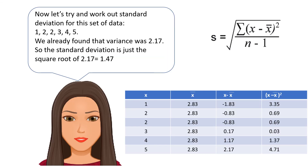Now let's work out standard deviation for the data set 1, 2, 2, 3, 4, and 5. We already found that the variance was 2.17 earlier, so the standard deviation is simply the square root of 2.17.